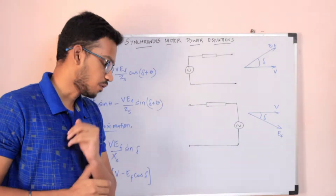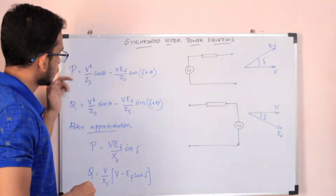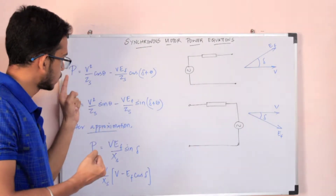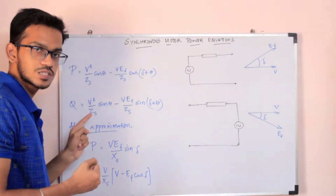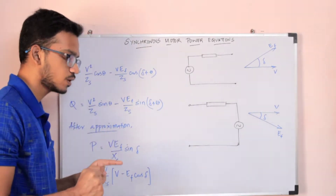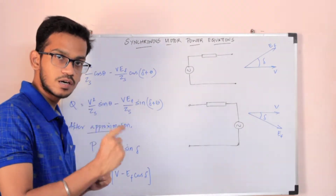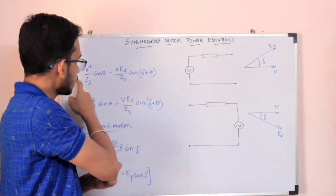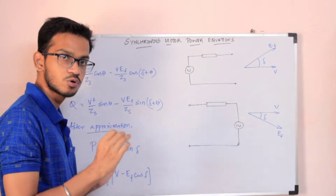In this video, we will see the synchronous generator power equations. We will denote P and Q — P is the synchronous motor absorbed real power equation, and Q is the synchronous motor absorbed reactive power equation. P and Q are the default notation used throughout this video.